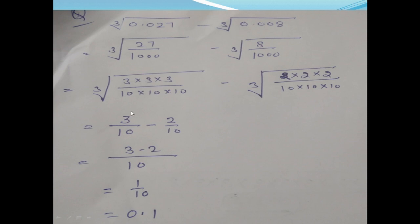You will get 3 × 3 × 3 for 27, and 2 × 2 × 2 for 8. For 1000, you can make a group of 10 × 10 × 10. So you get 3 over 10 minus 2 over 10. Subtracting gives 1 over 10. Since the question is in decimal form, you will convert the answer to decimal: 1 over 10 = 0.1.